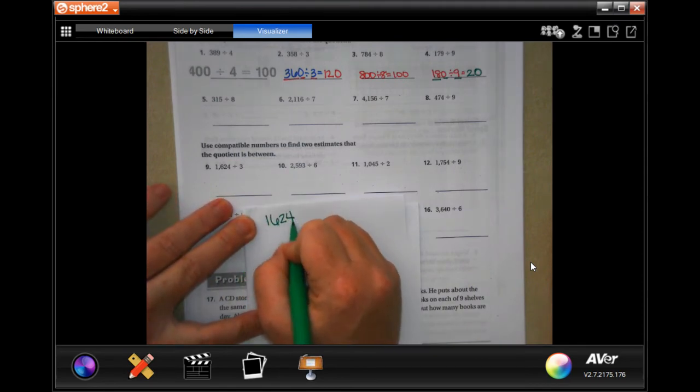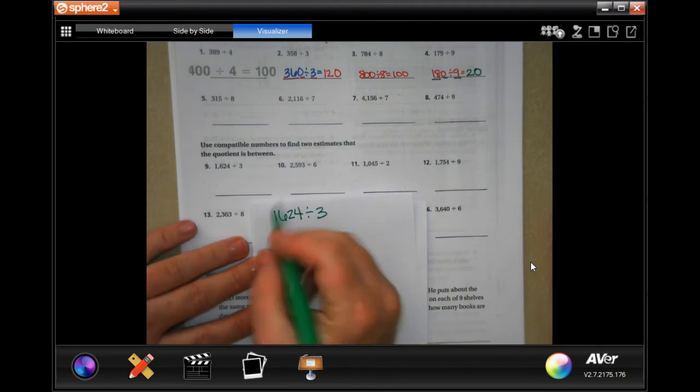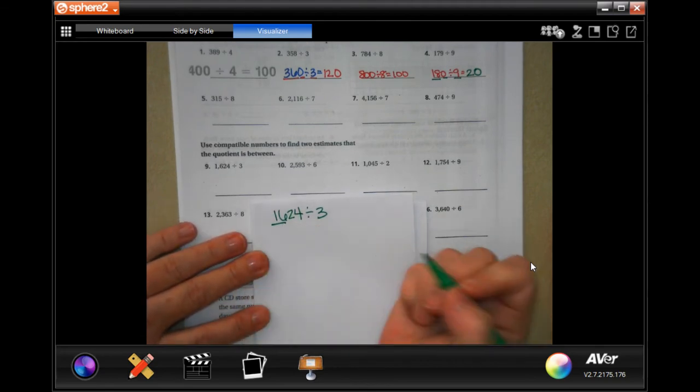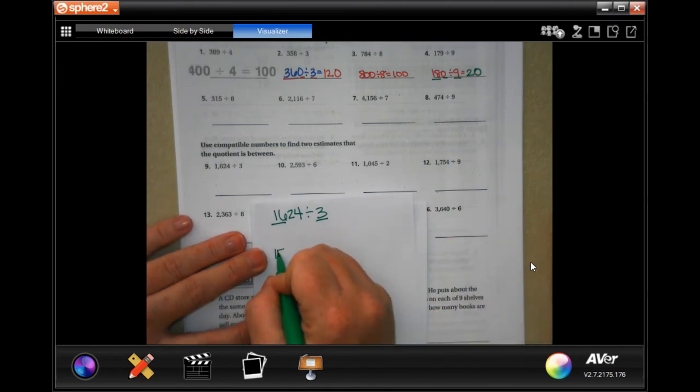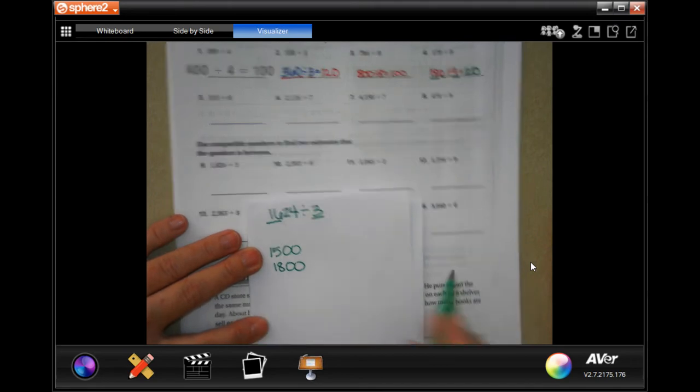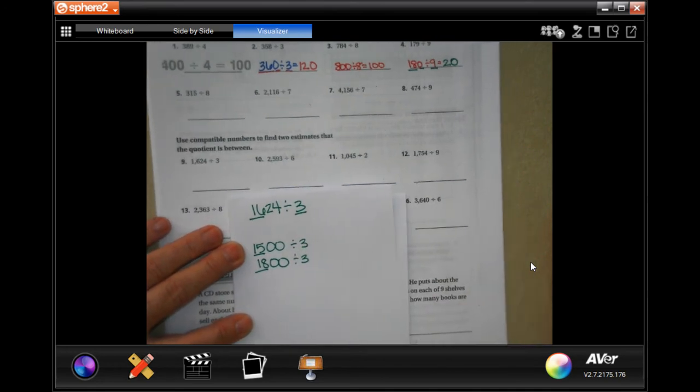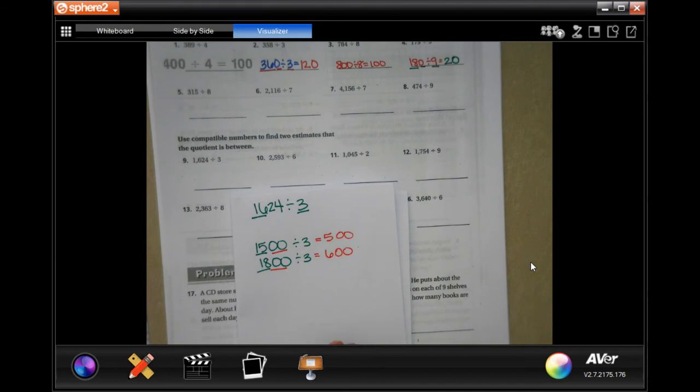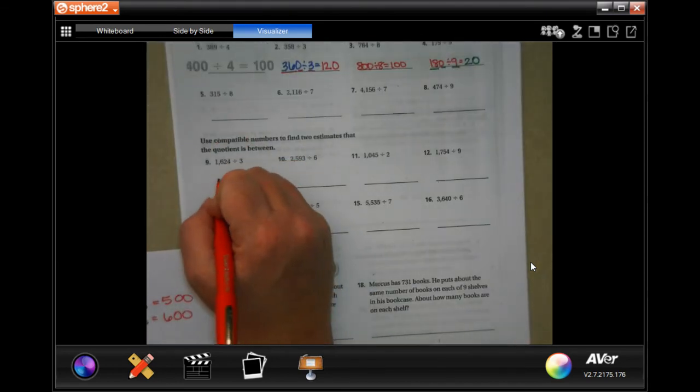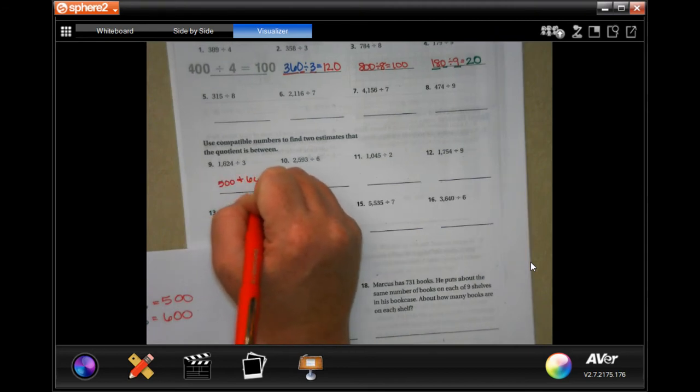So 1624 divided by 3. So I would take that 16 and I would make it 1,500 and I would make it 1,800, because 3 goes into both of those numbers, into 15 and into 18. So 3 goes into 15 five times and then has two zeros, and 3 goes into 18 six times and then has two zeros. So your estimate would be between 500 and 600.